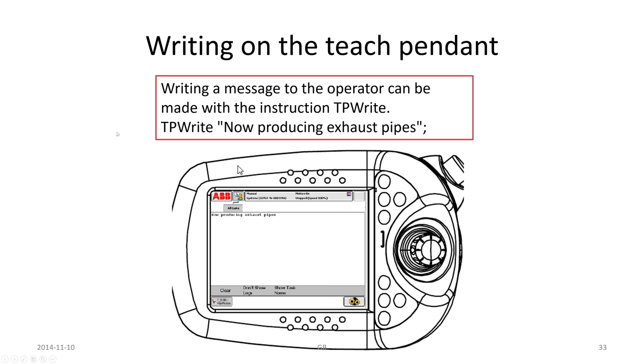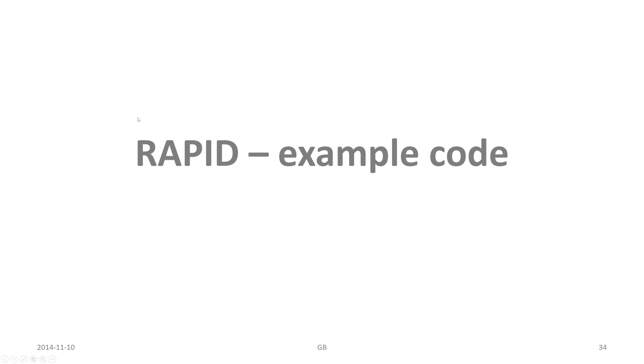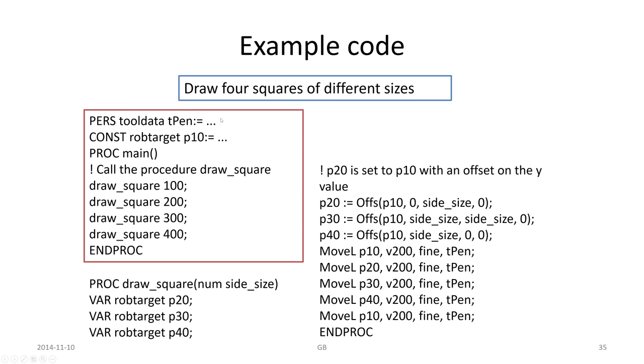Take care about going backward. Then we can do some messages to the teach pendant of course, that is possible with the TPWrite instruction and some example code.